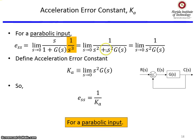The last error constant is Ka, the acceleration error constant. This one applies to the parabolic input. Everything stays the same — only R(S) changes.